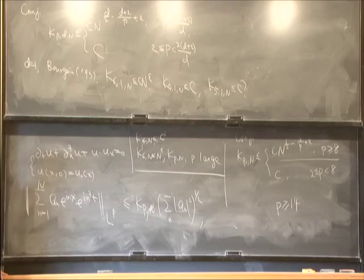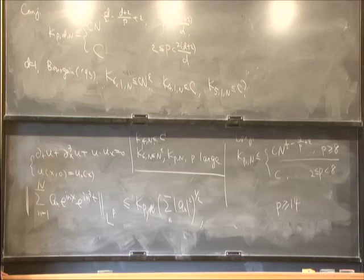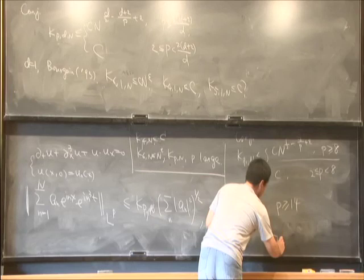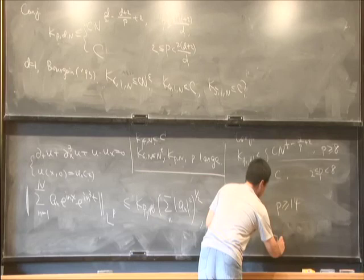For example, if you have this result, then you should have the embedding that X^(1/2 - 4/p + ε) is embedded into L_local^p. Suppose we have the conjecture that actually p is larger than or equal to 8. I think I'll just stop here. Thank you very much.